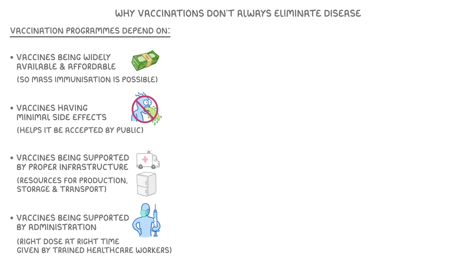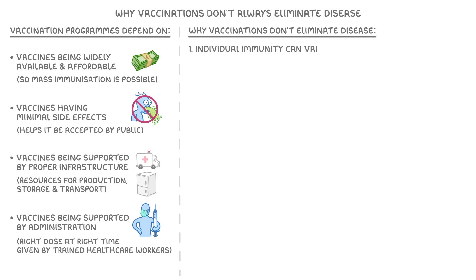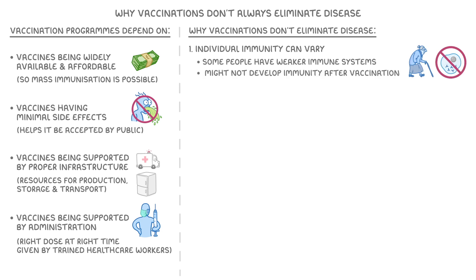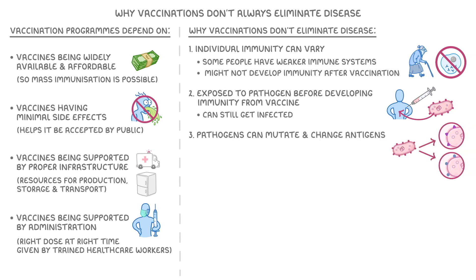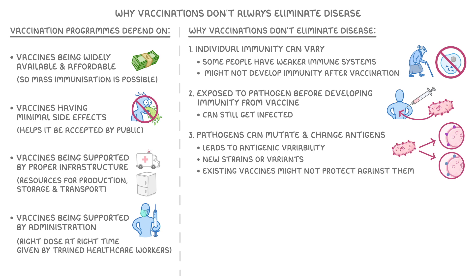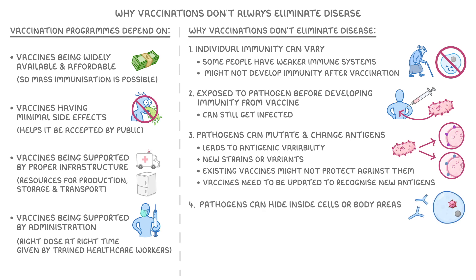On top of all this, even if that all goes well, there can be several reasons why vaccinations don't eliminate disease. First, individual immunity can vary, which means some people have weaker immune systems and might not develop strong immunity even after vaccination. Additionally, if someone's exposed to a pathogen before developing immunity from a vaccine, they can still get infected. Pathogens can also mutate and change their antigens, leading to what we call antigenic variability. This means there can be new strains or variants of a pathogen with different antigens on their surface, and so existing vaccines might not fully protect against them. In order to counter this, vaccines need to be updated in order to recognise these new antigens and remain effective. Some pathogens can hide inside cells or body areas that are hard for immune systems to reach, making them more difficult to eliminate.